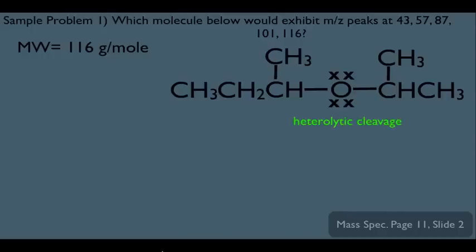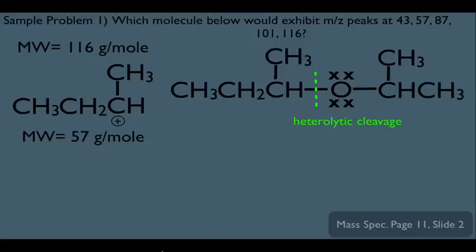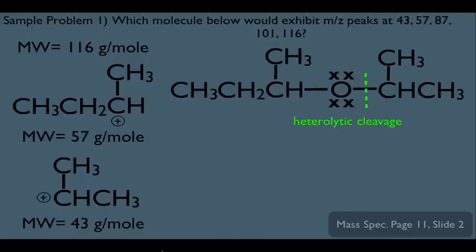Now let's look at the types of cleavage for S-butyl isopropyl ether. Ethers can undergo heterolytic cleavage. Cleaving the left side of the oxygen produces a carbocation on the left-hand side — expect a peak at 57. Ethers can also cleave on the right side heterolytically, producing a fragment on the right — expect a peak at 43. That takes care of heterolytic cleavages.